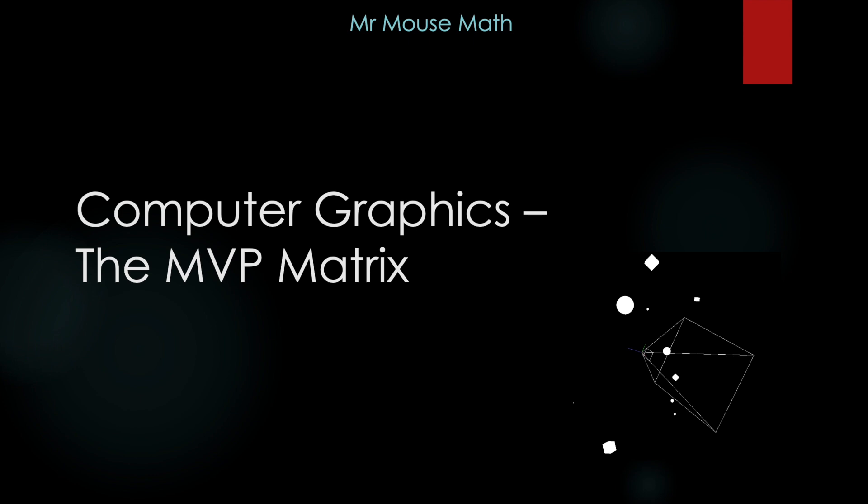In this video of my computer graphics series, I'm going to discuss the remaining matrices involved in mapping the coordinates of an object in its own coordinate system to the screen of your device. These two remaining matrices are for the viewing and projection transforms.